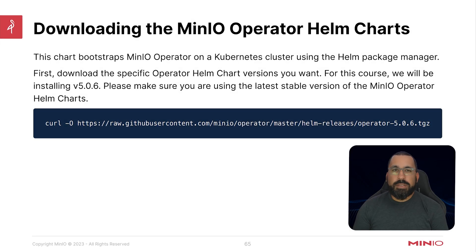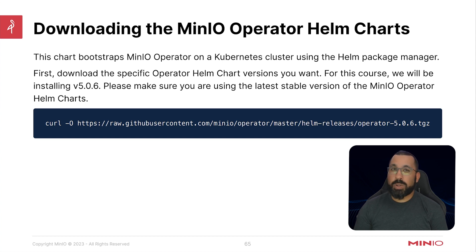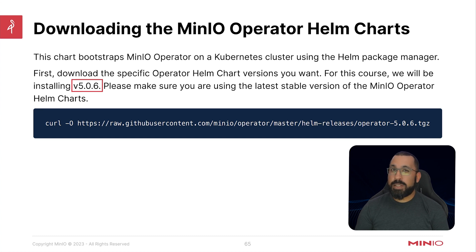Back on our slides, this is the section we will use to download the MinIO Operator Helm charts. This chart bootstraps the MinIO Operator on a Kubernetes cluster using the Helm package manager, and it's generic to any Kubernetes cluster — EKS, AKS, or in our case Rancher. We'll be using version 5.0.6, though depending on when you're watching this, there may be a much newer version available, so make sure you use the latest stable version of the MinIO Operator Helm charts.